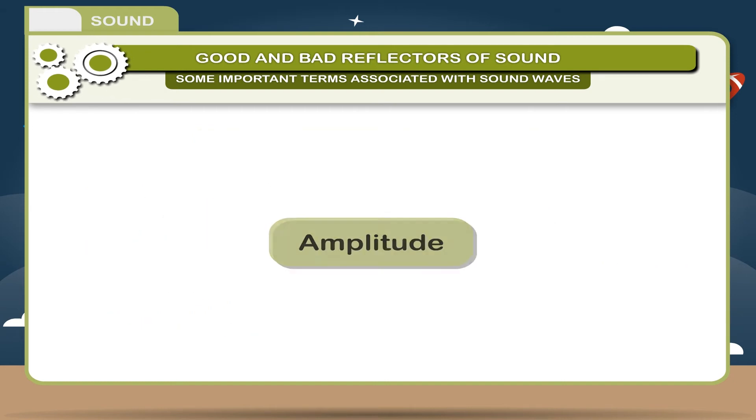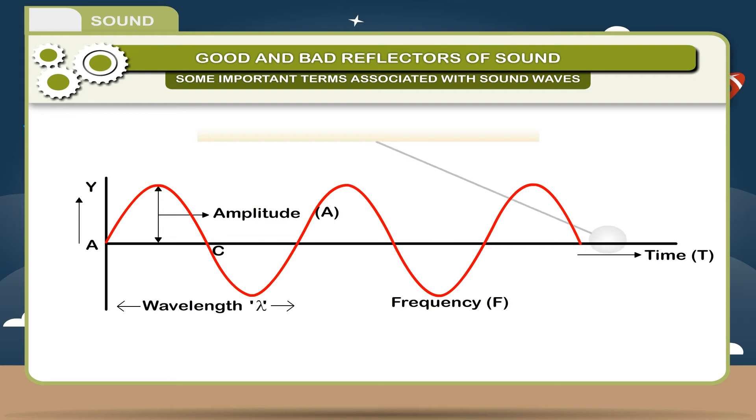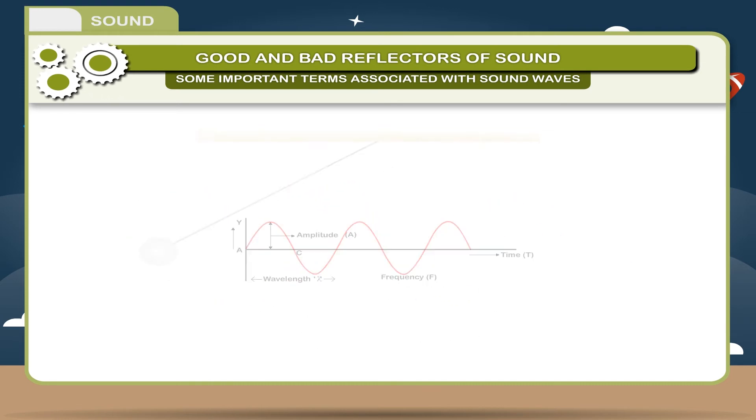2. Amplitude: The maximum displacement of a particle on one side from its mean position is called amplitude. AY is the amplitude of the wave shown in the figure.